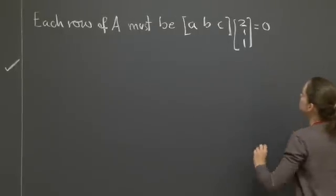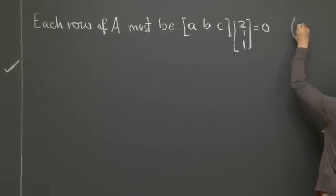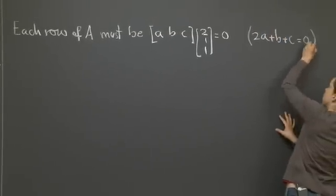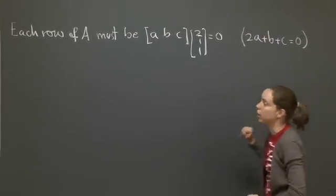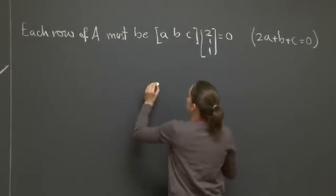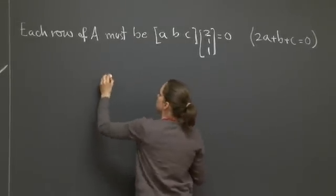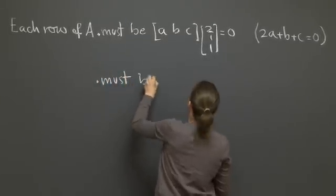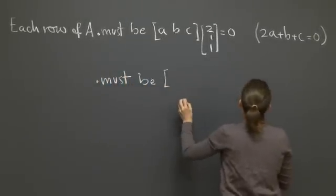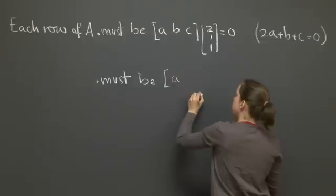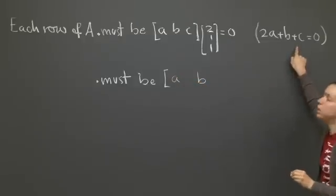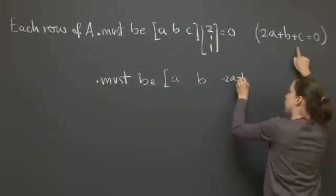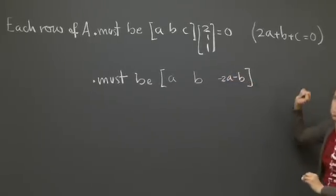Which means that, well, let's see, 2A plus B plus C is equal to 0. So I can actually write it in this format, let's see, must be of the form A, B, and then C must be equal to minus 2A minus B. Right?